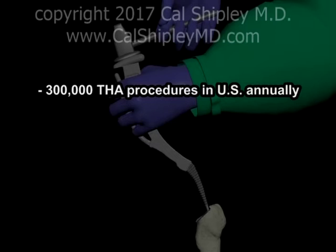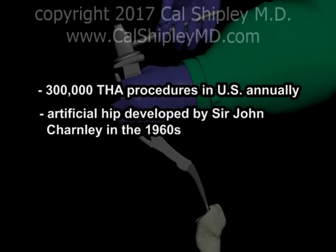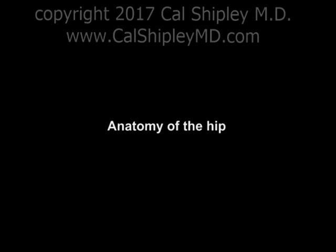THA is one of the most common orthopedic procedures performed in the United States, with an estimated 300,000 procedures performed annually. A British orthopedic surgeon, Sir John Charnley, is credited with the development of the first practical artificial hip. Let's start by looking at the anatomy of the hip.